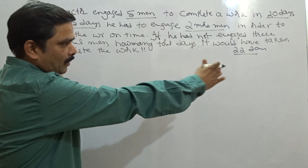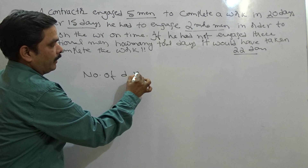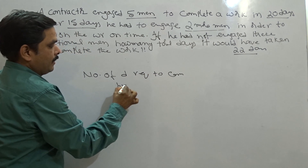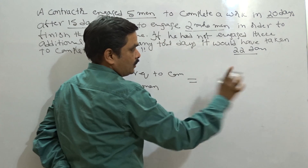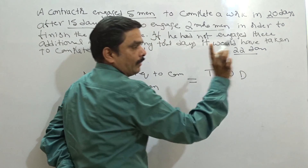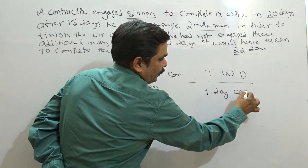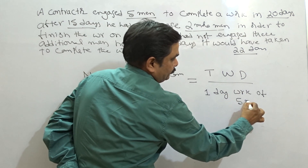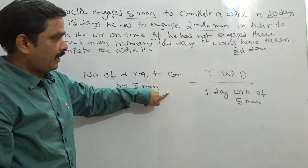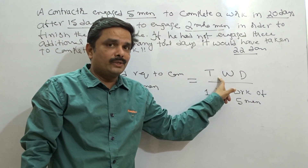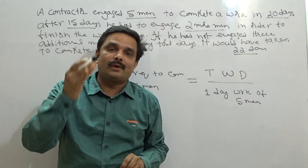To go for this, use the simple way. Number of days required to complete the work by 5 men should be equal to: first, find out what is the total work done, divided by the one day work of five men. That will give me the number of days required for five men to complete the work.